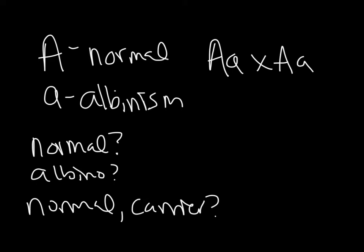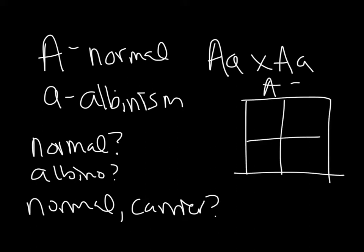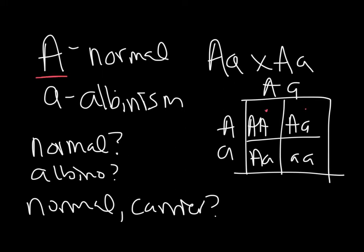You might know off the top of your head this is a monohybrid cross, which gives the 1 to 2 to 1 and 3 to 1 ratios. But if not, we can do our Punnett square. Then we say how many of these are normal — we're looking for a big A, and we have 1, 2, 3 of these boxes normal.